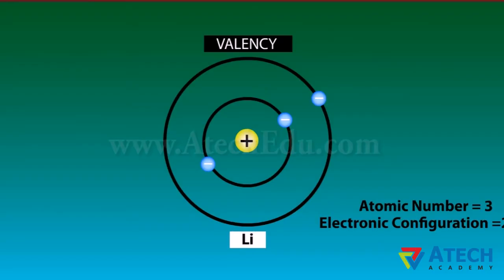The electrons present in the outermost shell of an atom are known as valence electrons, as they decide the valency of an atom. The combining capacity of an atom is known as valency. For example, in lithium, the outermost orbit has one electron — it has one valence electron and will lose one electron to combine with other atoms.